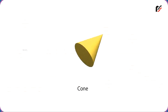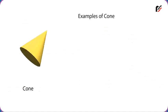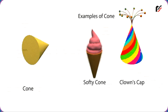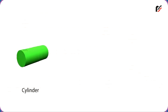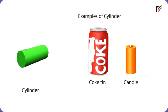This is a cone. Softy cone, clown's cap, etc. are examples of cones. This is a cylinder. Coke tin, candle, etc. are examples of cylinders.